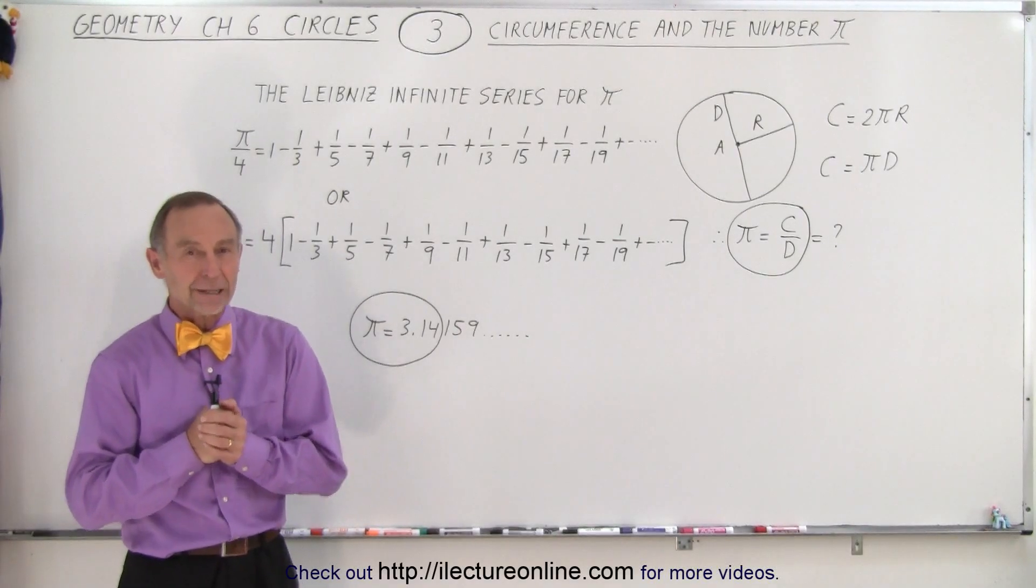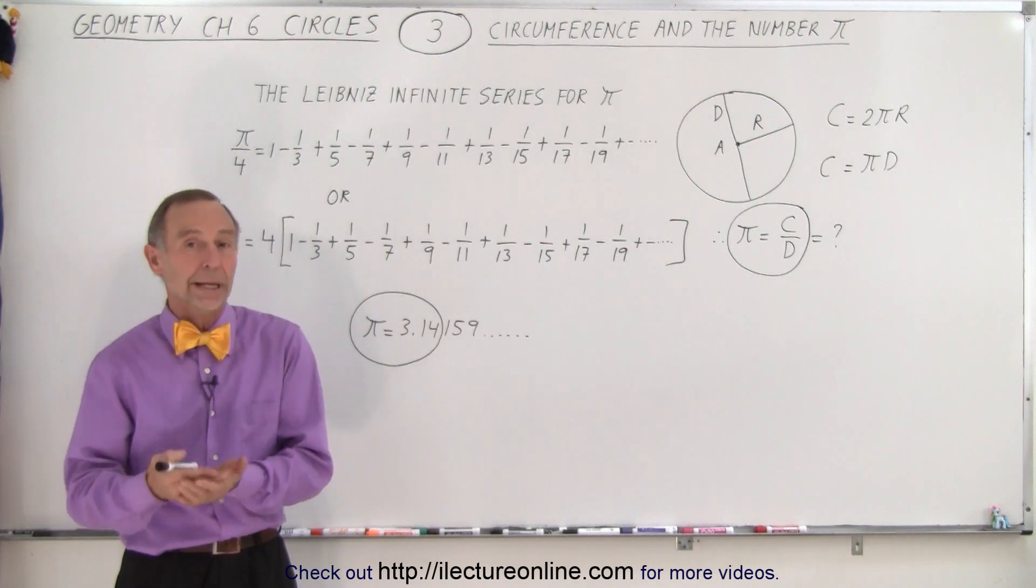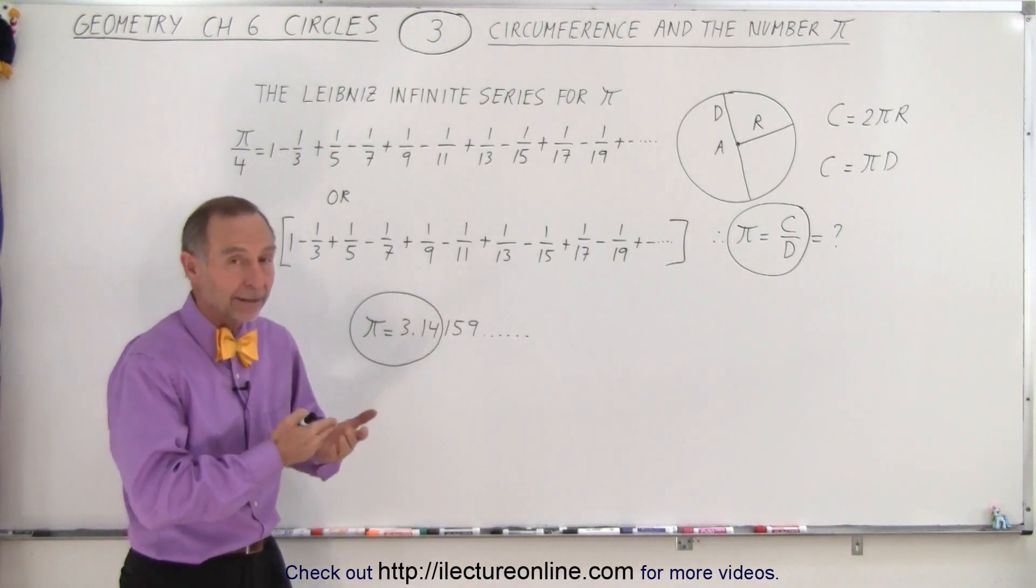Welcome to Electronline. By now we know that the circumference of a circle is 2π times the radius, or we can say it's π times the diameter.